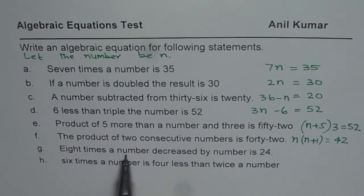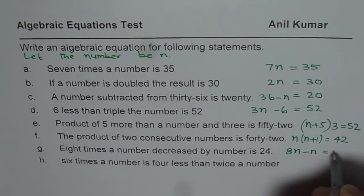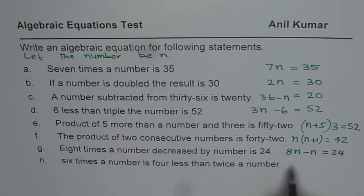8 times the number, decreased by number is 24. 8 times the number, decreased by number is 24. Got it, right? 8 times the number, decreased by number is 24.